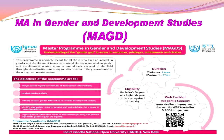MA in Gender and Development Studies mainly deals with statistics and data analysis, gender budgeting, gender auditing, gender mainstreaming, and governmental policies of not only India but also international policies. To study this MA, you must have a BA background — your eligibility is BA in any discipline.